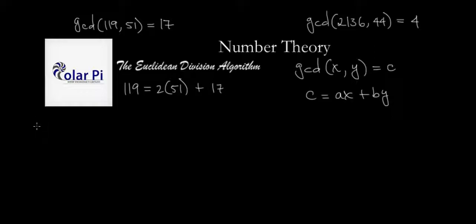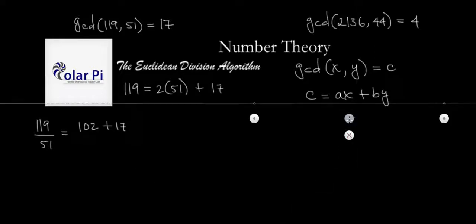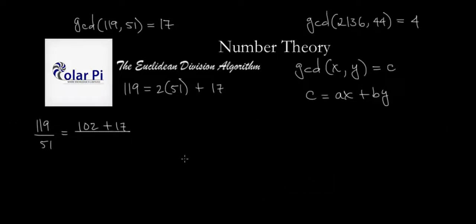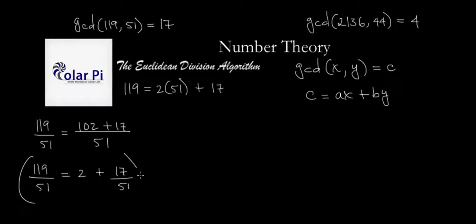In the first example, 119 divided by 51: note that double 51 is 102, so 119 = 102 + 17 = 2 times 51 plus 17. You can do long division instead, but this is a quicker way to get there. Multiplying both sides of that equation by 51 gives you the quotient-remainder form: 119 = 2×51 + 17.